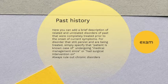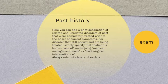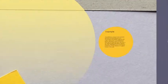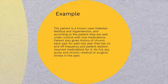Past history: here you add a brief description about related and unrelated disorders of the past that were completely treated prior to the onset of current symptoms. For disorders that are still present and being treated, specify that the patient is a known case of, who is undergoing treatment since a given date, and had surgical intervention on a given date. You have to rule out chronic disorders especially hypertension, diabetes, hypothyroidism, etc. Example: The patient is a known case of diabetes mellitus and hypertension, and according to the patient, they are well under control with oral medications. The patient also gives history of chronic back pain for past two years that has on-and-off frequency and seldom required medication. No history of any acute or chronic medical or surgical illness in the past.